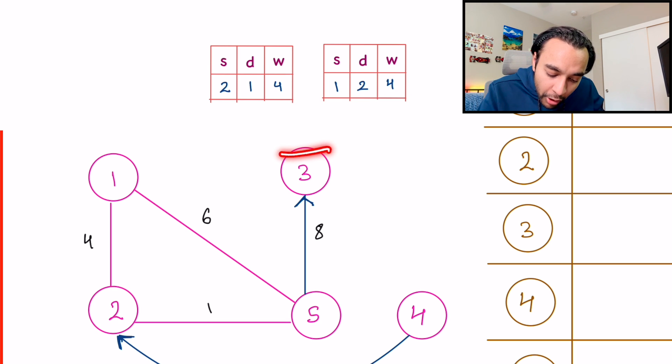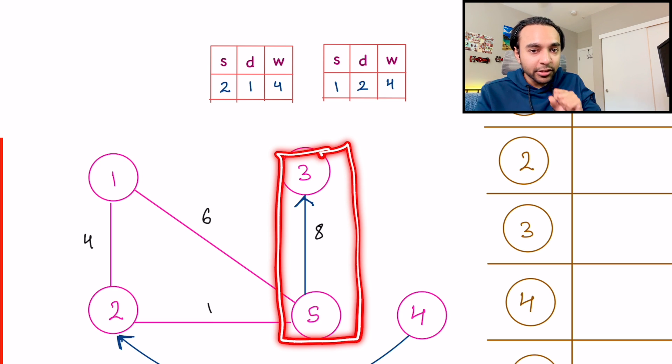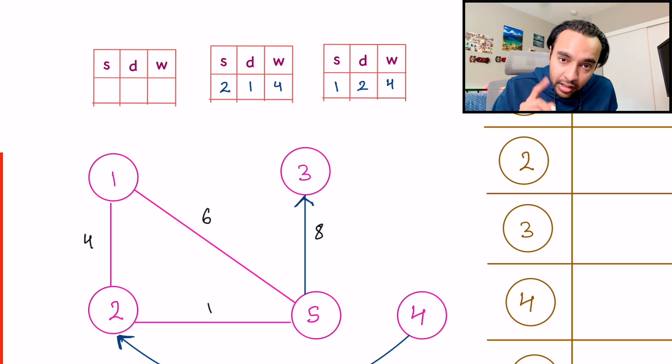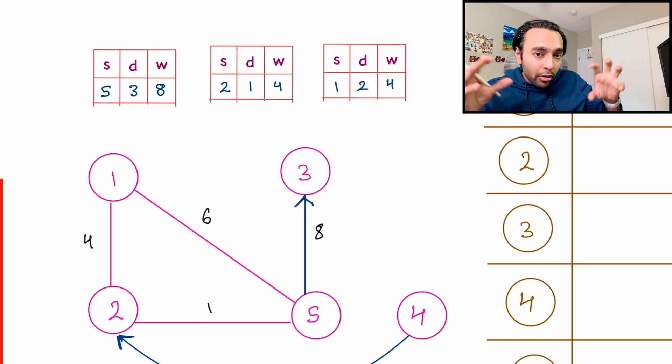What happens if you have a directed edge, like this one? Once again, we are going to create the object. And then the source is five, the destination is three, and the edge weight is eight. So this is how you are creating all of your edge objects.